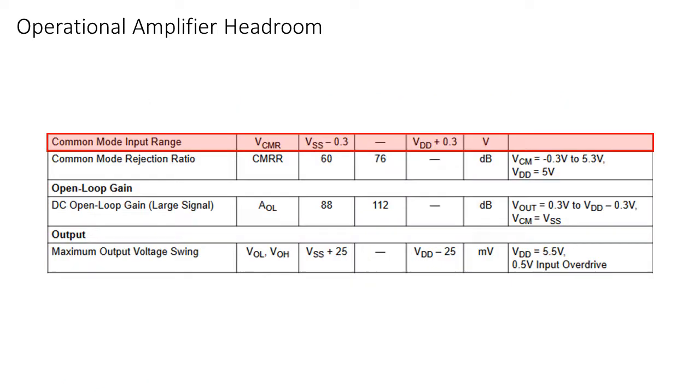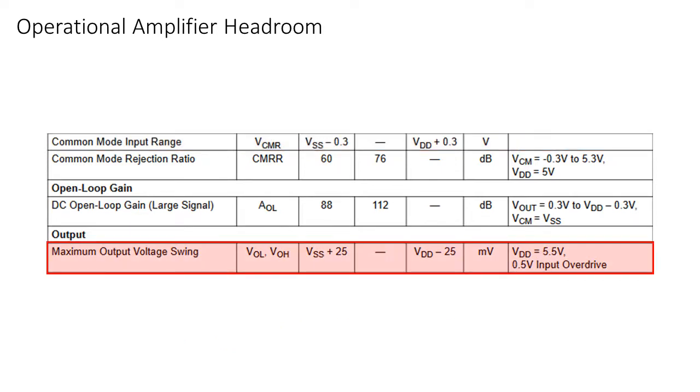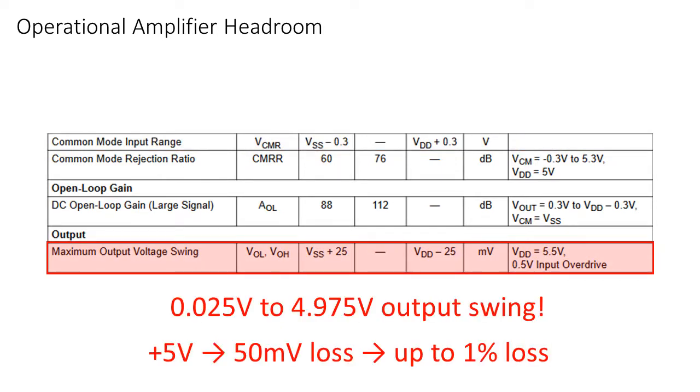If we take a look at the common mode input range, it's visible how the range is even outside the limits of the power supply. So if your power supply is 5V, then you can put a voltage from minus 300mV to 5.3V at the input. And if we check the output swing, it's visible how the output voltage can get within 25mV of both rails.